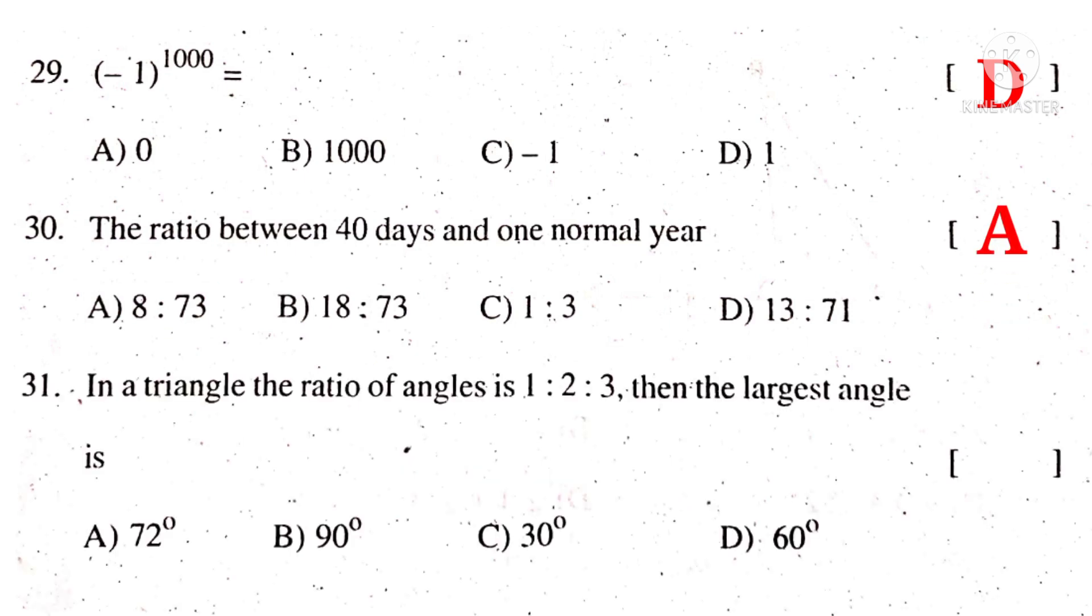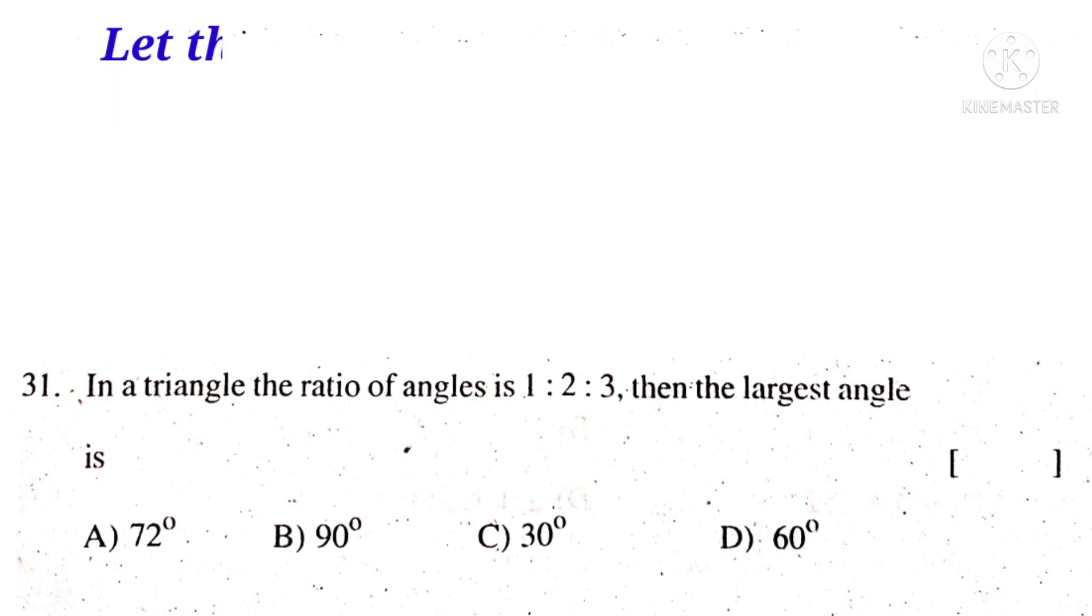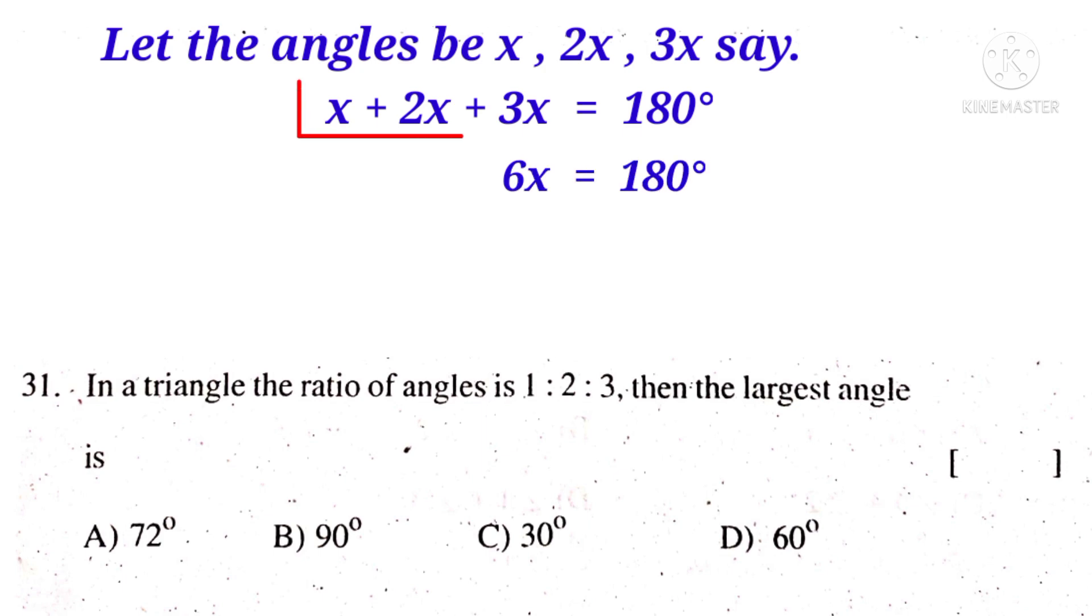In a triangle, the ratio of angles is 1 is to 2 is to 3. Then the largest angle is. Let the angles be X, 2X, 3X. Because 1, 2, 3 here are multiplied by a variable X. Sum of the angles in a triangle is 180 degrees. So X plus 2X plus 3X is equal to 180 degrees. So 6X is equal to 180 degrees. So X is equal to 180 degrees by 6. On simplification by 6, 6 30 times. That is equal to 30 degrees is the answer. So the correct choice is C.